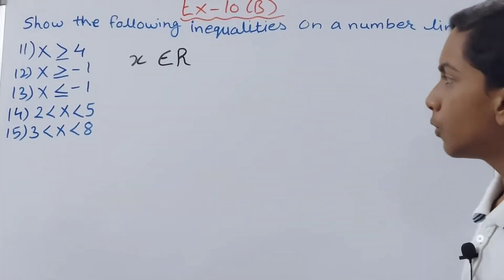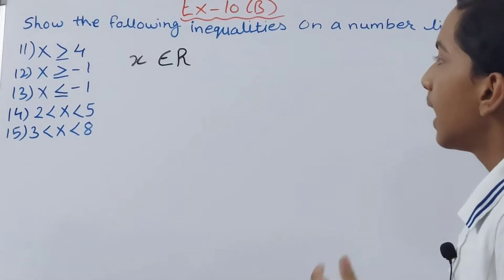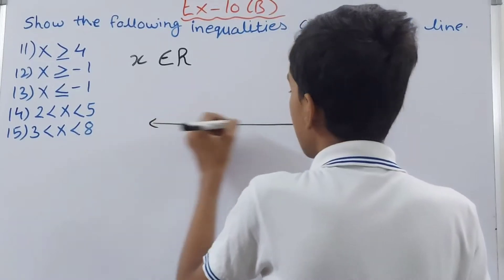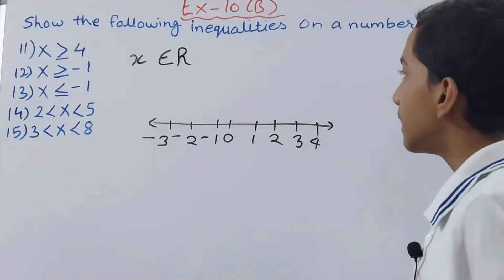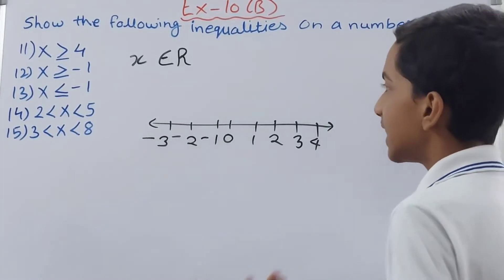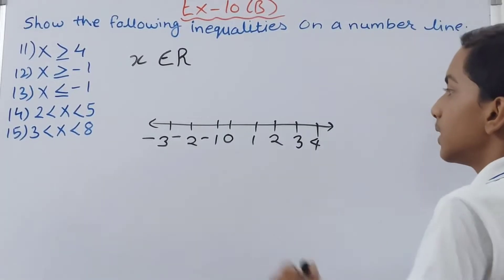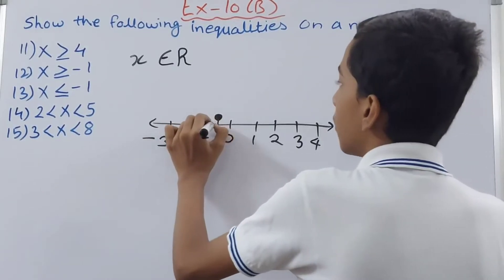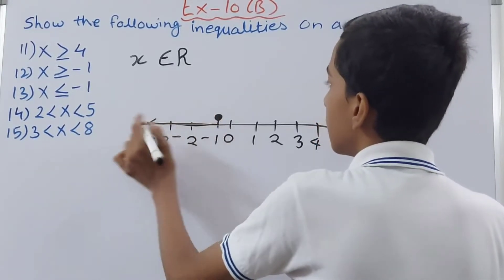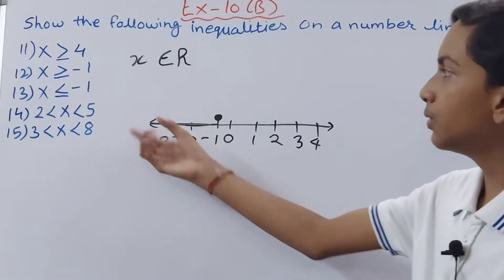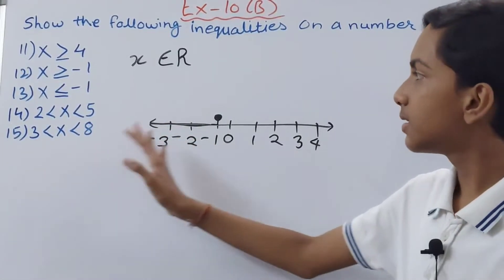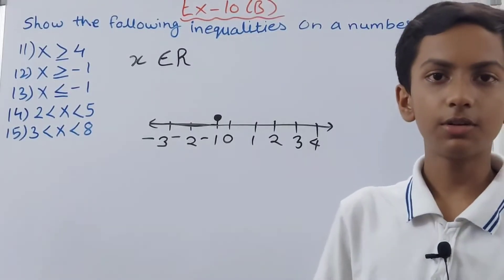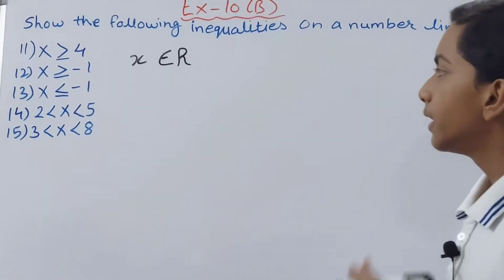Now we move on to the next part: x is less than or equal to minus 1. We take the number line again. Since x is less than or equal to minus 1, we draw a shaded circle on minus 1, and then highlight all the way to the left — these numbers have values less than minus 1. This is how we have represented the third inequality.